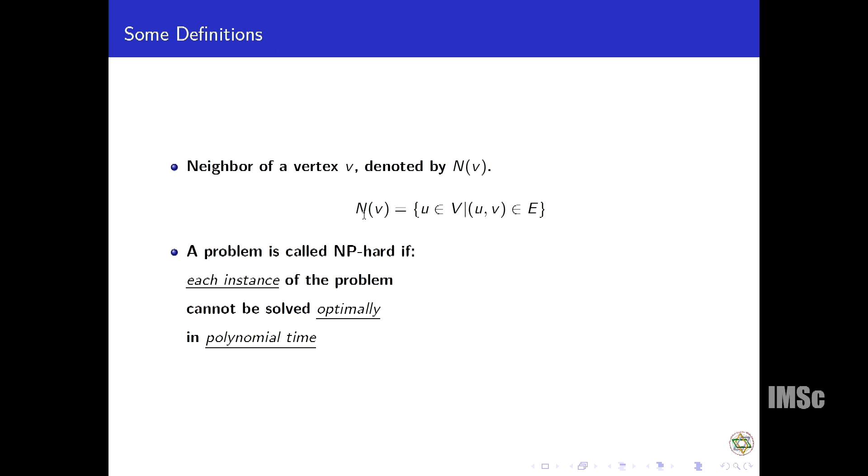We say neighbor of a vertex is those vertices which are adjacent to that vertex. Now, a problem is called NP-hard if each instance of the problem we cannot solve it optimally in polynomial time. I have underlined each instance, optimally, and polynomial time, because it can happen that one instance we can solve. It is not that we cannot solve anything, but each instance we cannot solve.